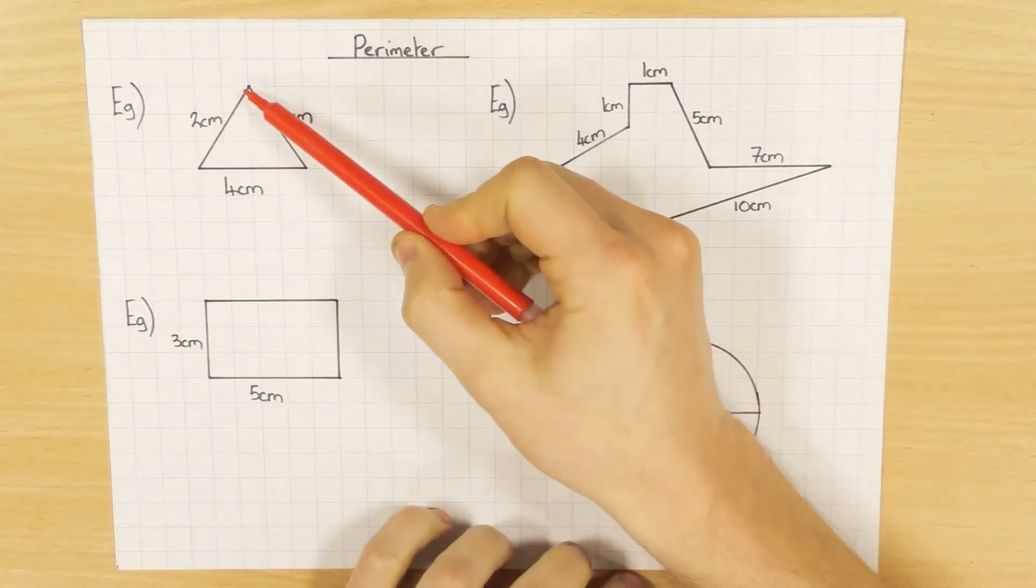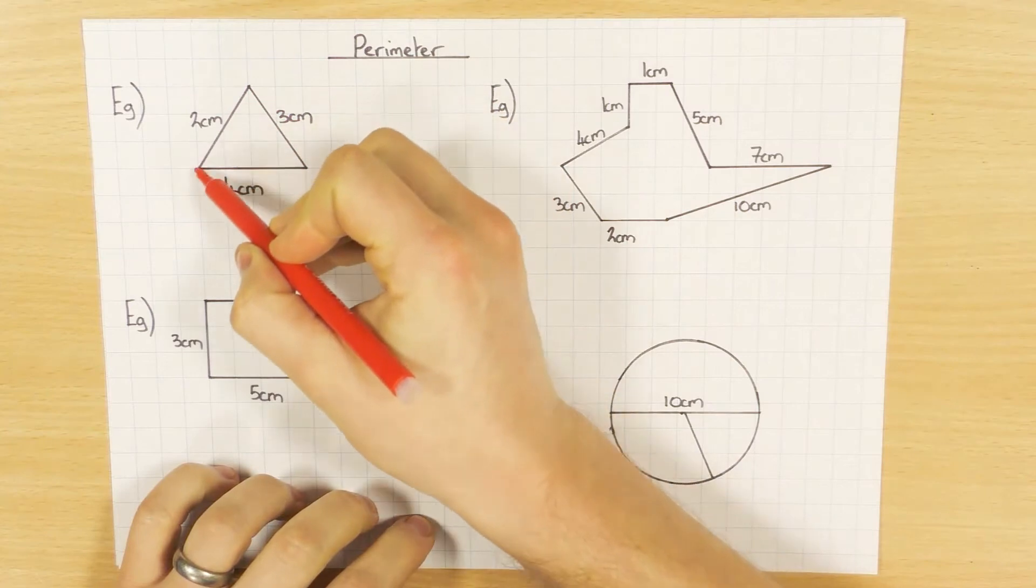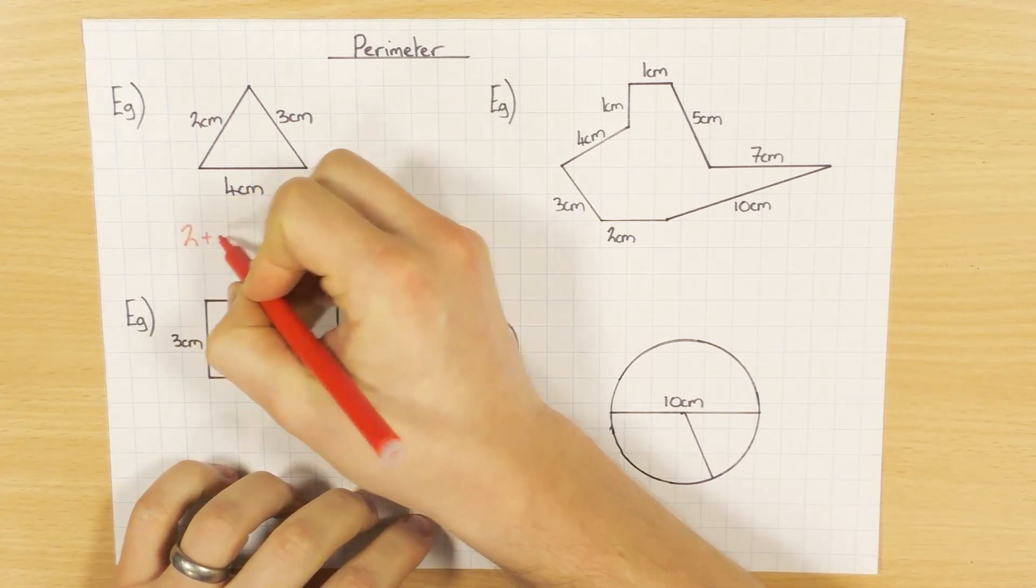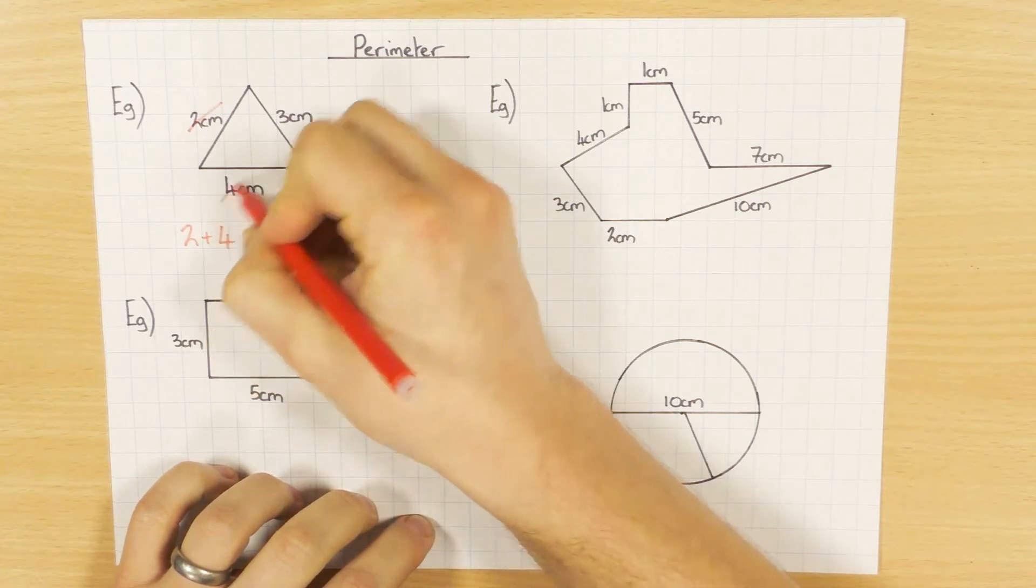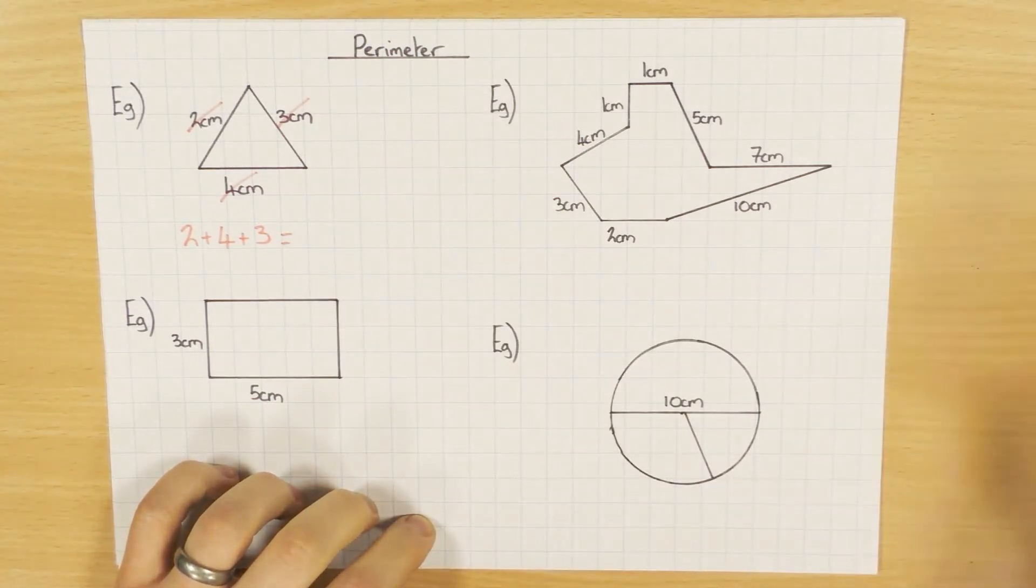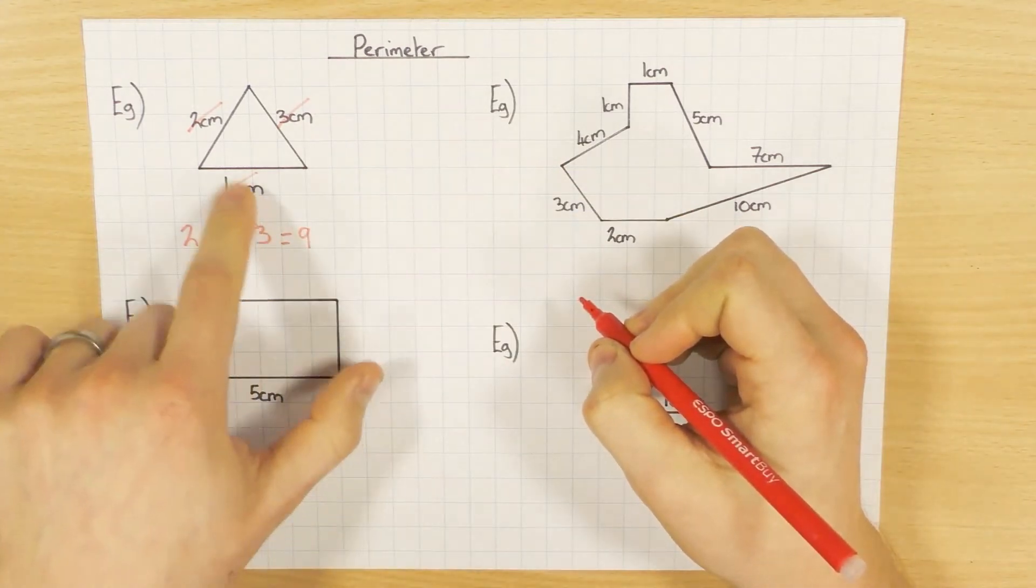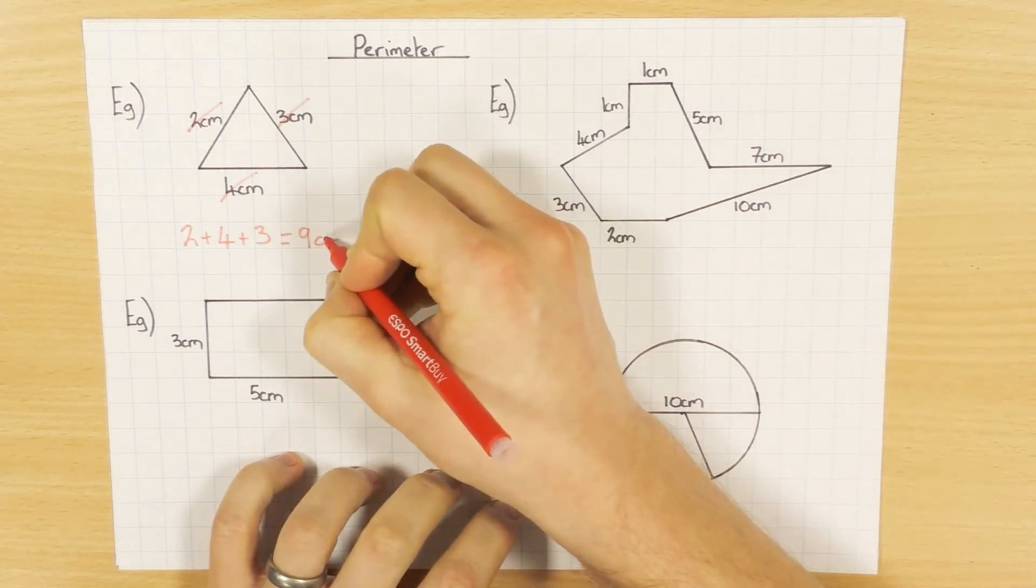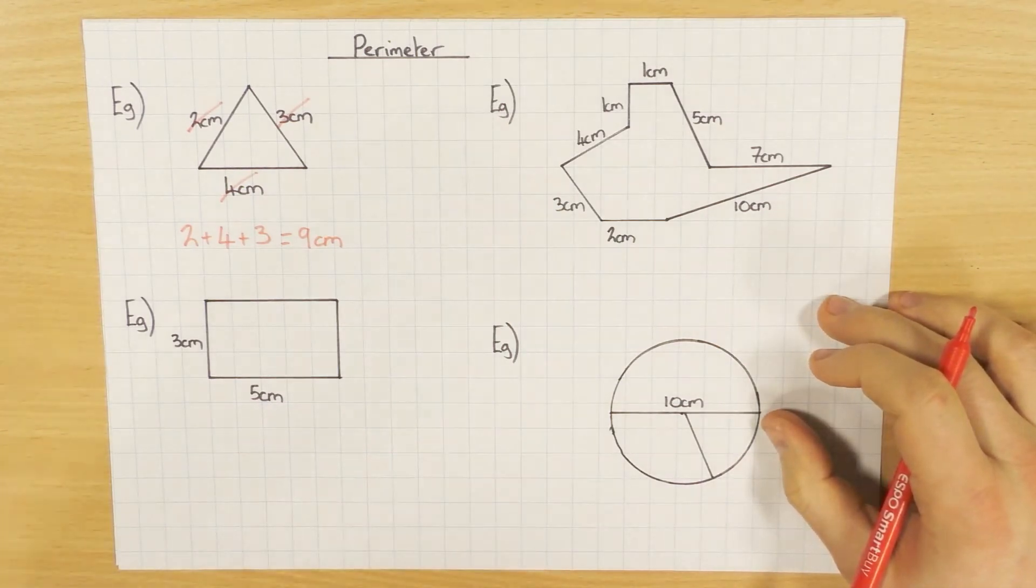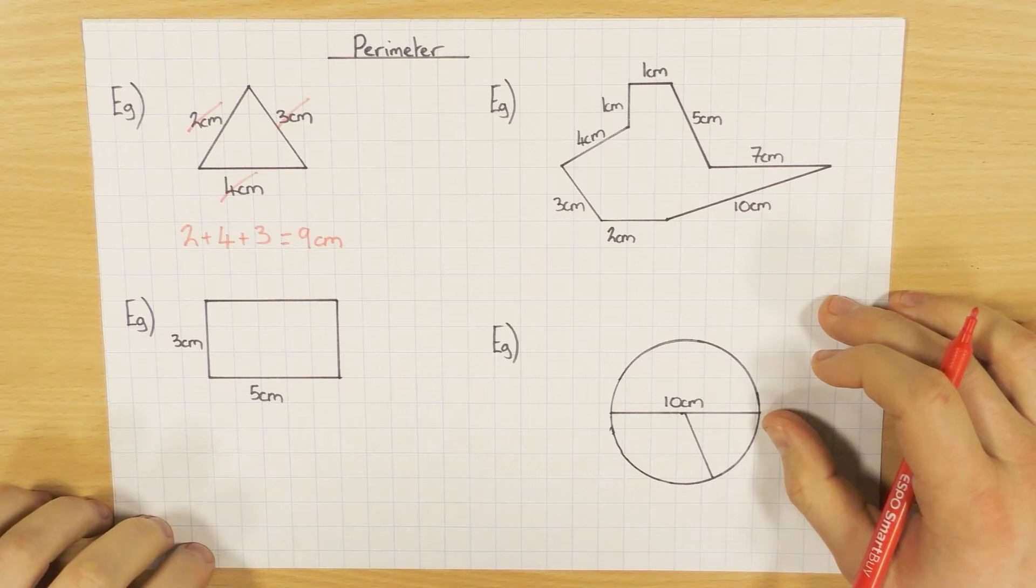Perimeter is the length around the outside of a shape. I would add 2cm, 4cm, and 3cm, which is what you should always write down. Cross them off as you go so you know you've done it. Always show your working: 2 add 4 is 6, add 3 is 9cm. The mistake people make is forgetting the units or getting them wrong. Because it's a length, it stays as centimeters - not centimeters squared for area or centimeters cubed for volume.